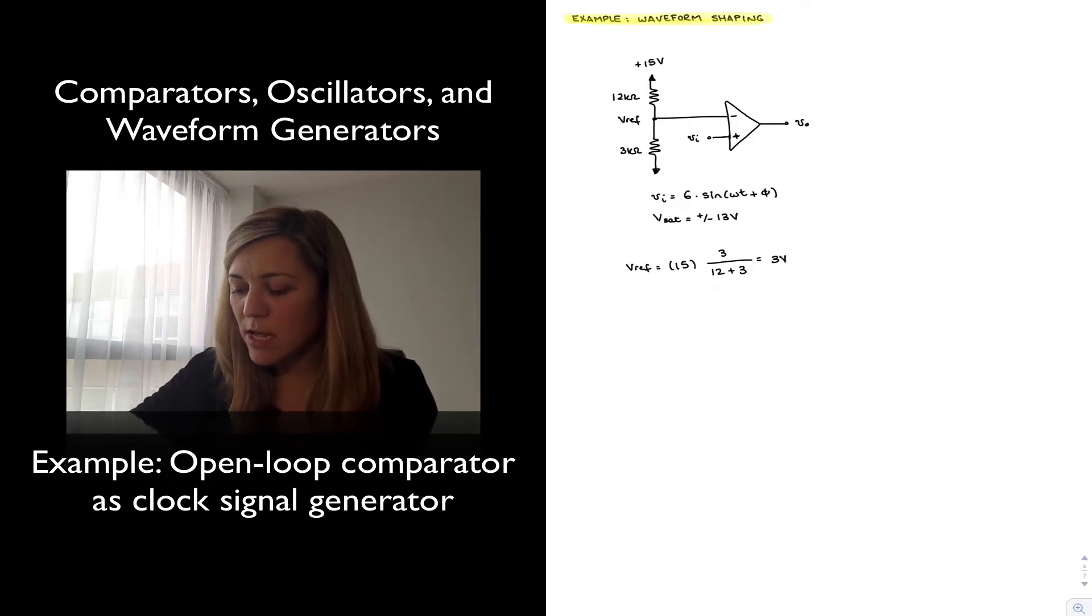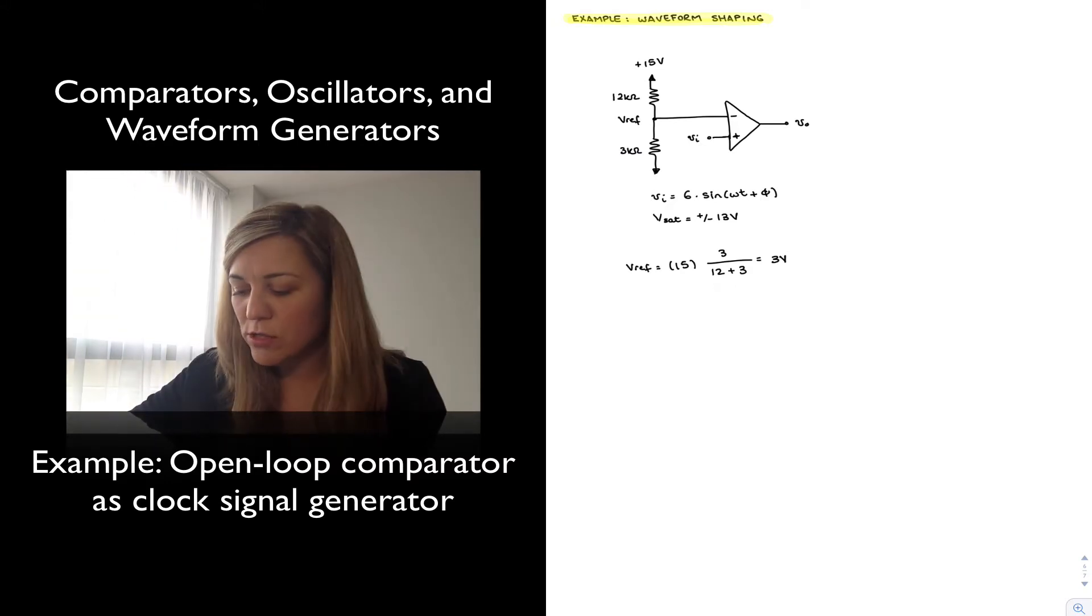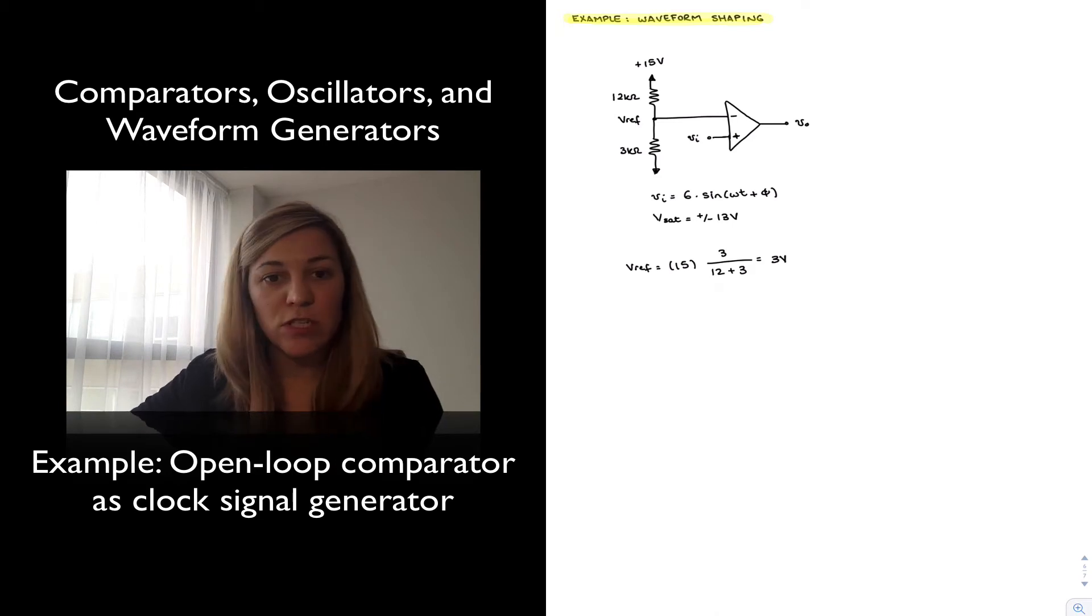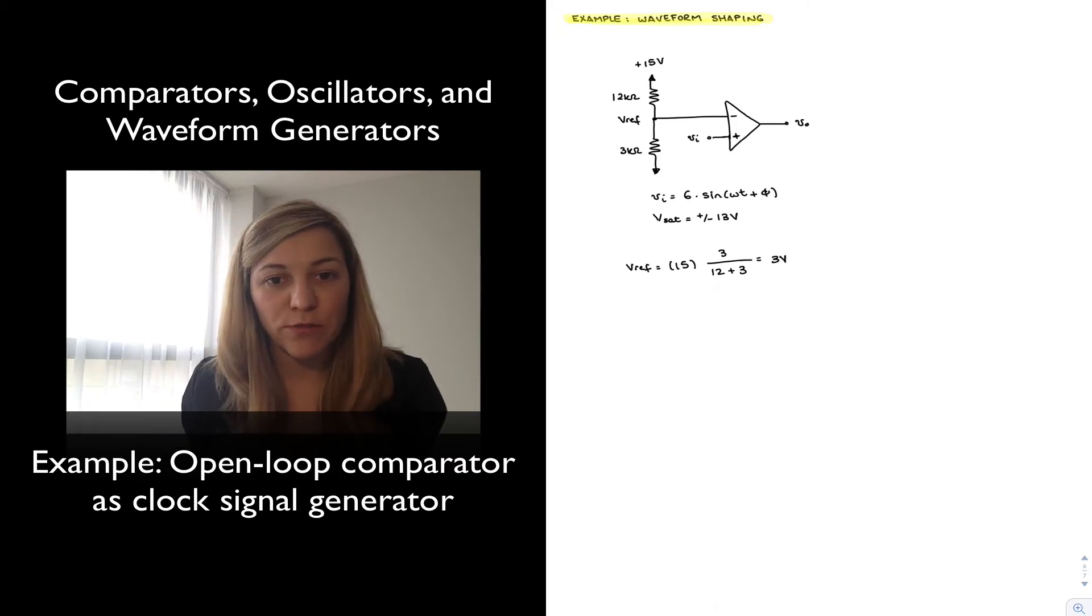So my reference voltage is 3 volts, and let's say that my input signal is a sinusoidal signal of amplitude 6 volts and my saturation voltages for the op-amp, assuming it is connected to plus minus 15 volt supplies, is going to be plus minus 13 volts.